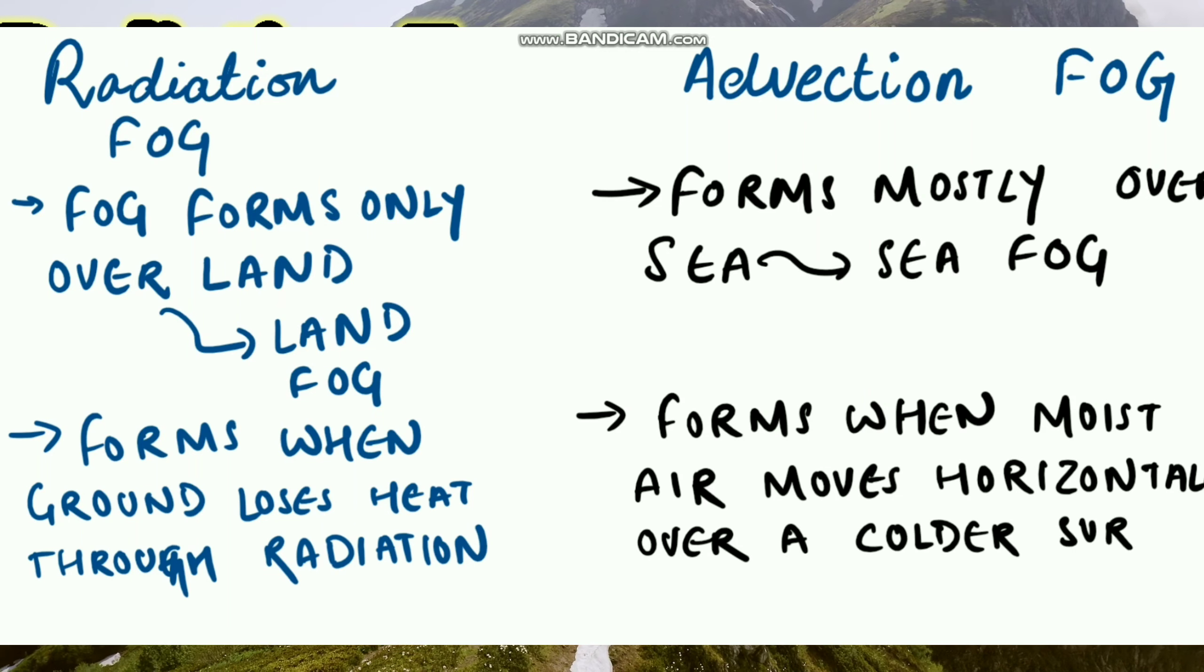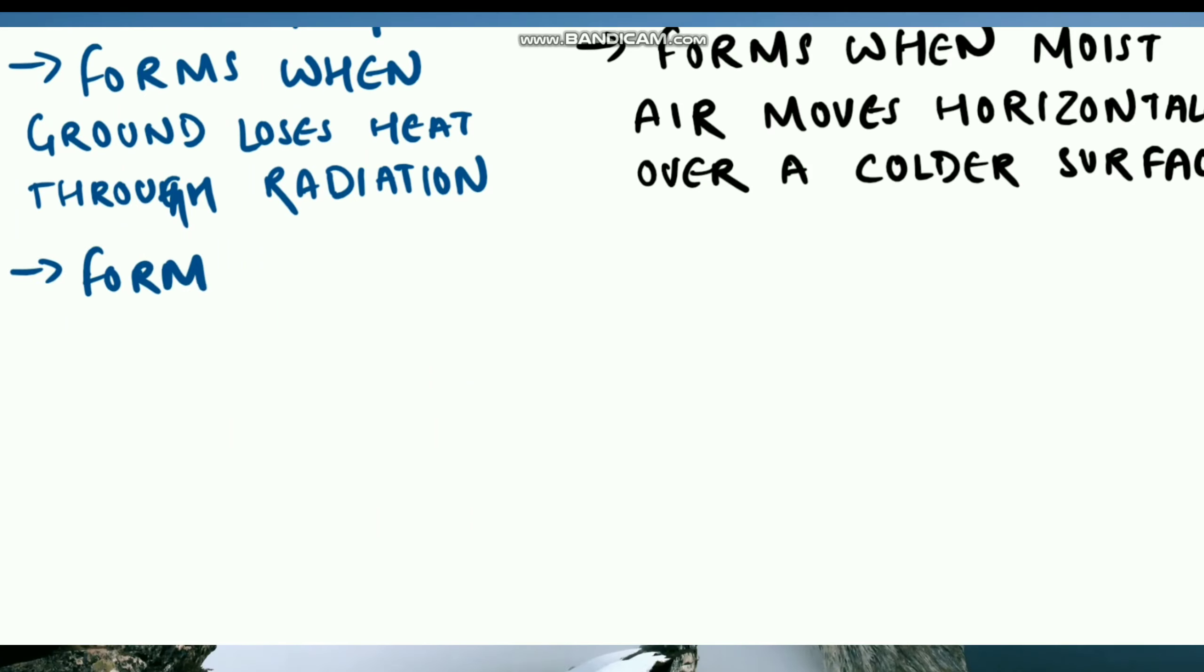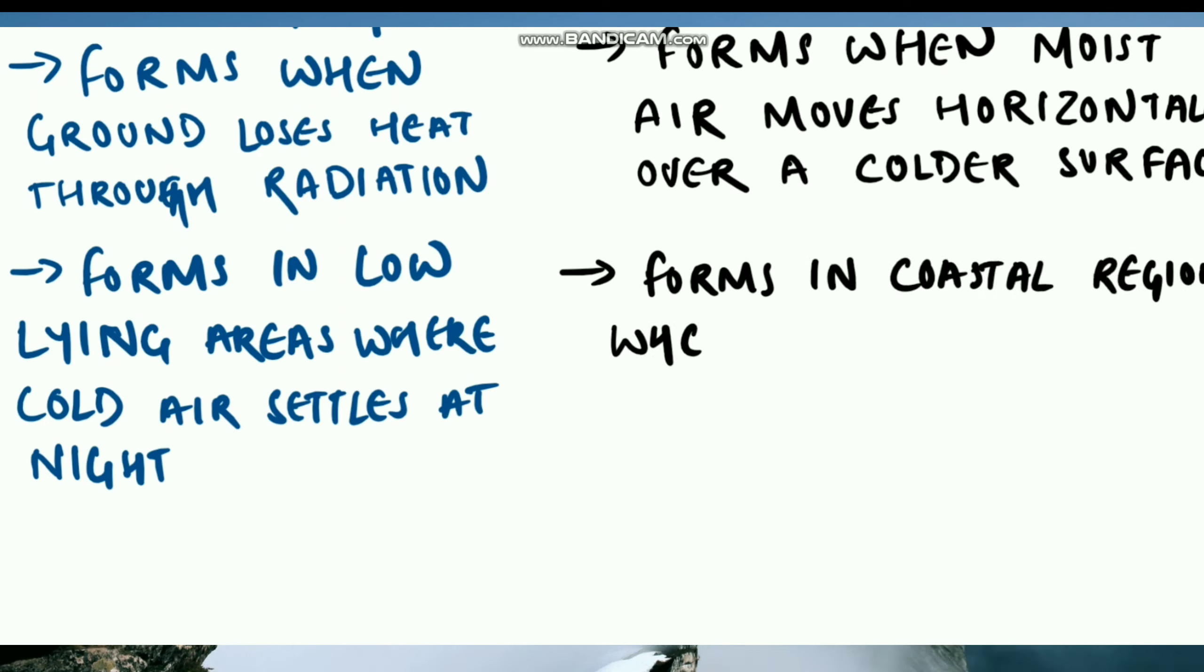Radiation fog forms in cold low-lying areas where cold air settles at night. Advection fog forms in coastal regions where warm moist air moves horizontally over a colder surface.